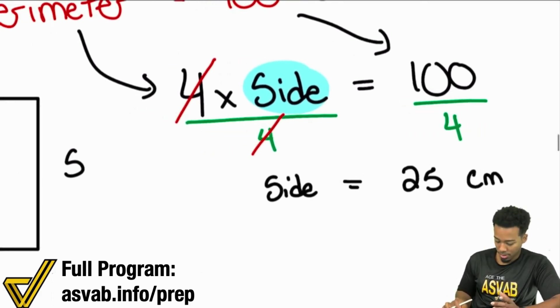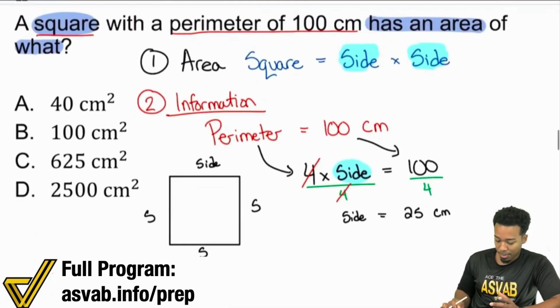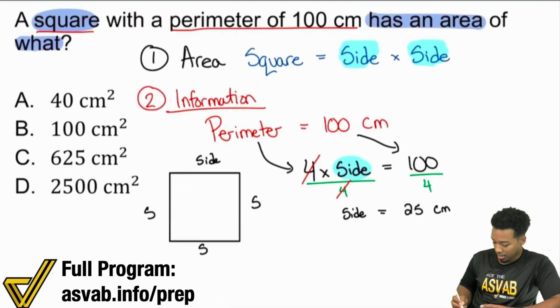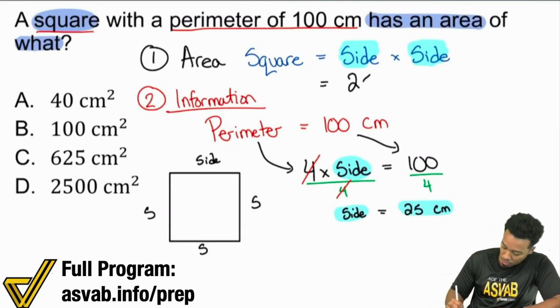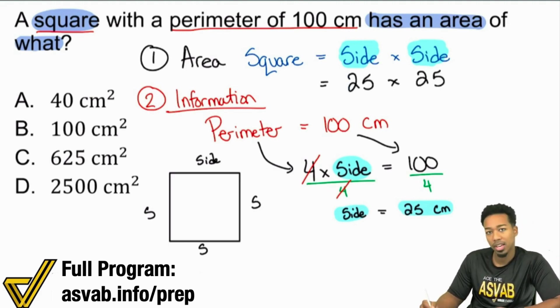But that is not the answer. Okay? That is not the answer, that is simply going to be the length of the side. So, we have the side length right there 25 centimeters and now we're going to plug that in. So, the answer will be 25 times 25. That will be the answer.